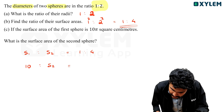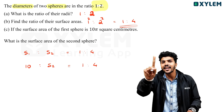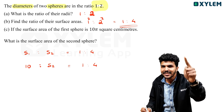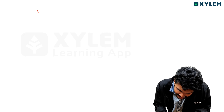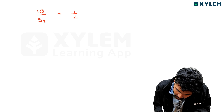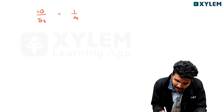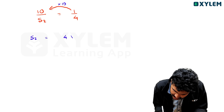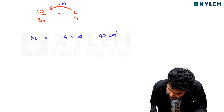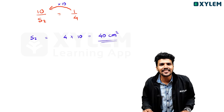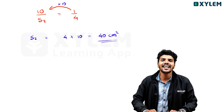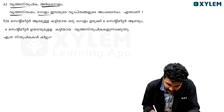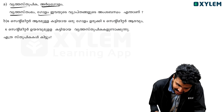S1 is to S2 equals 1 is to 4. Given S1 is 10 centimeter square, then 10 by S2 equals 1 by 4. So S2 equals 4 into 10, which is 40 centimeter square. You can answer it — 40 centimeter square.